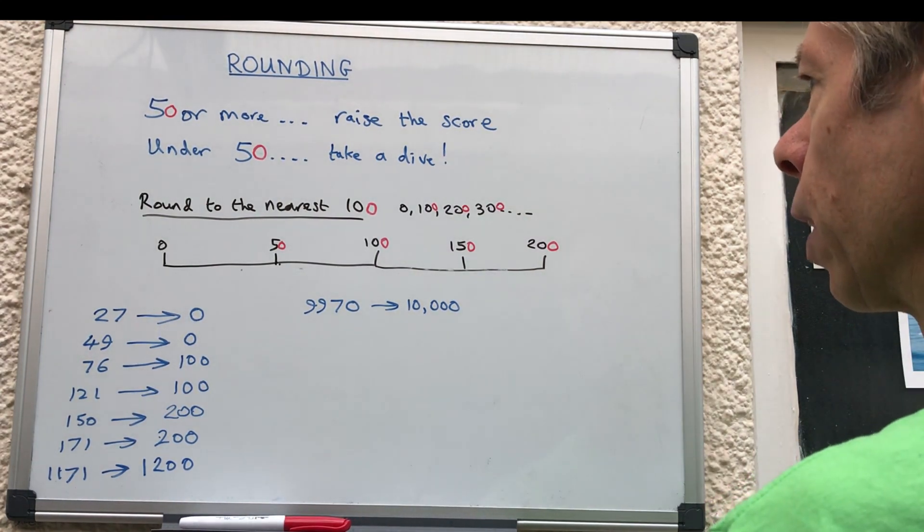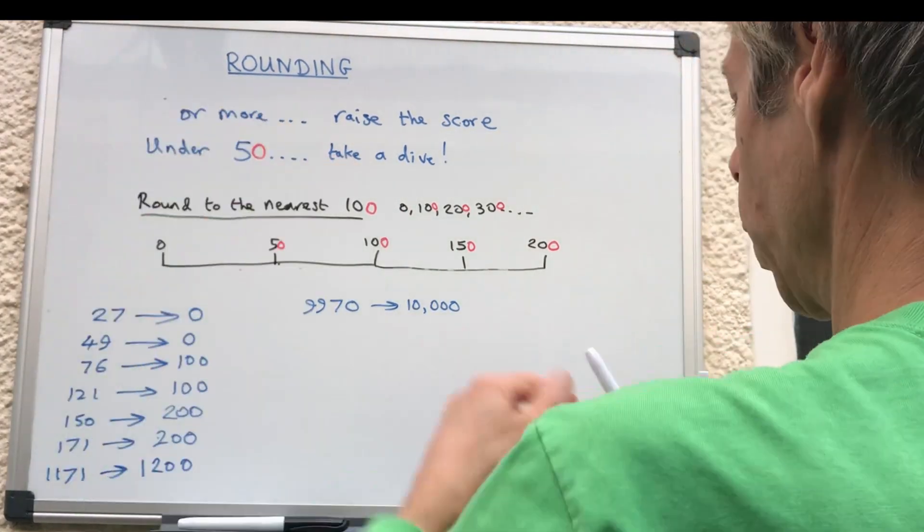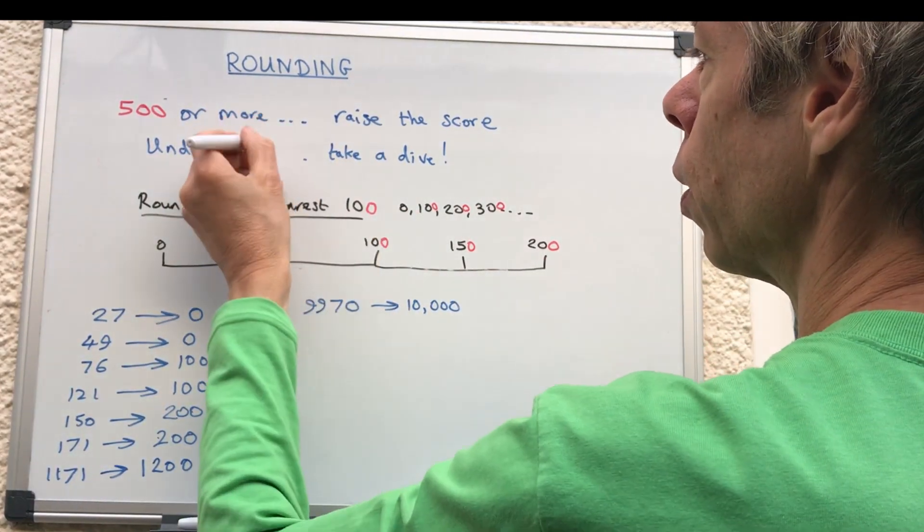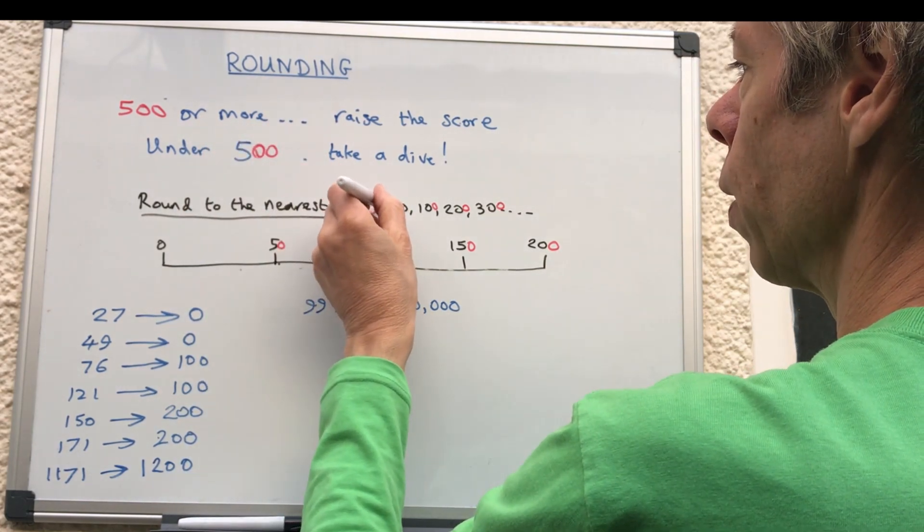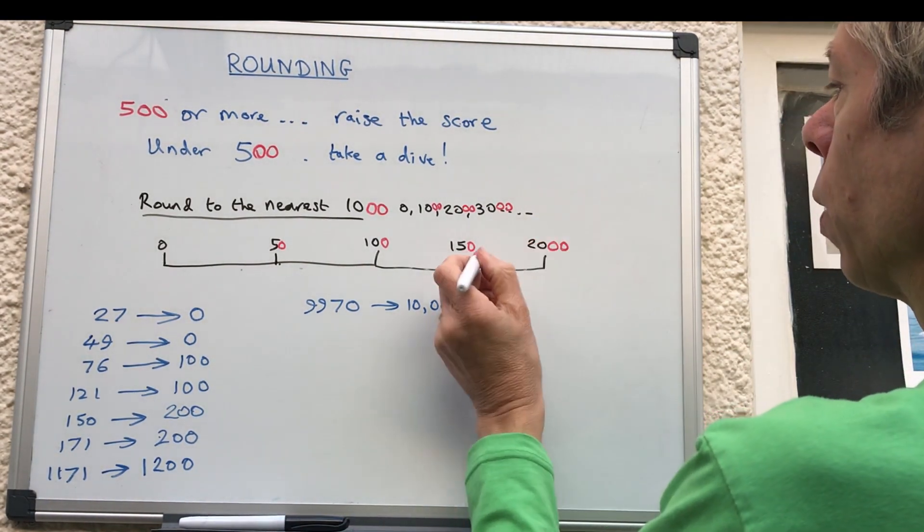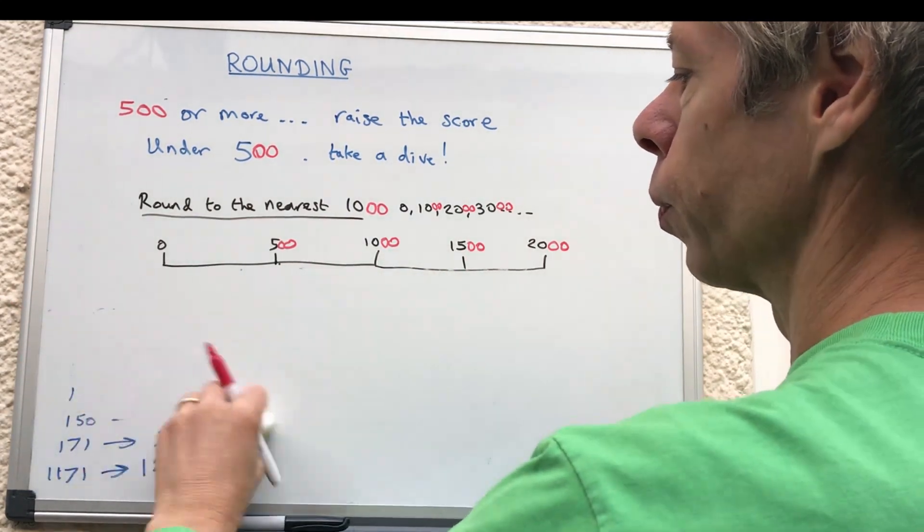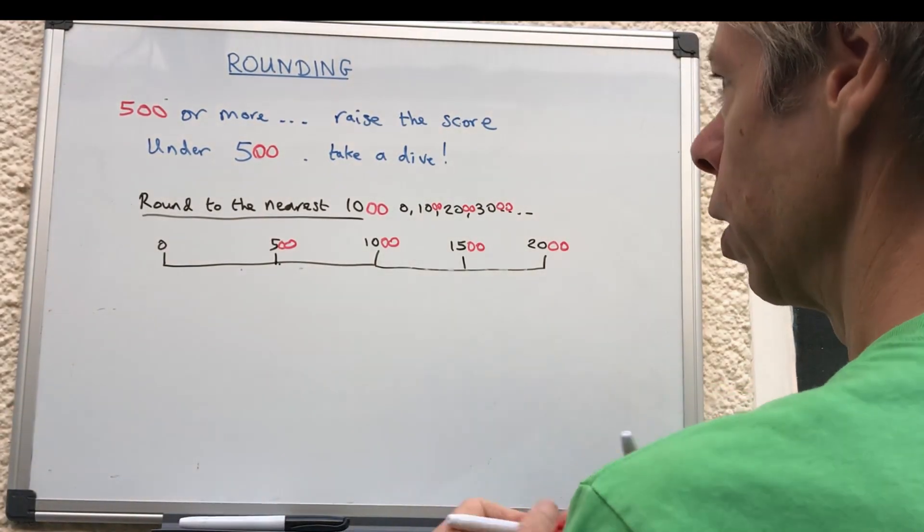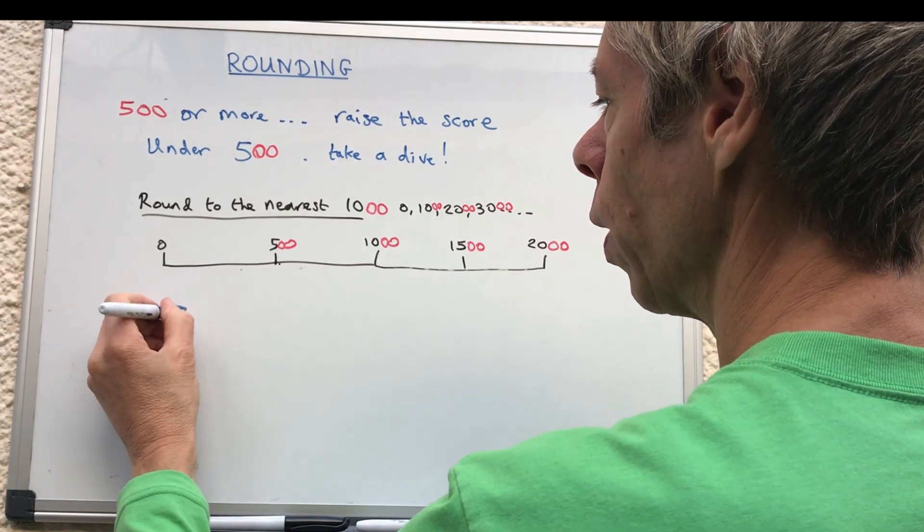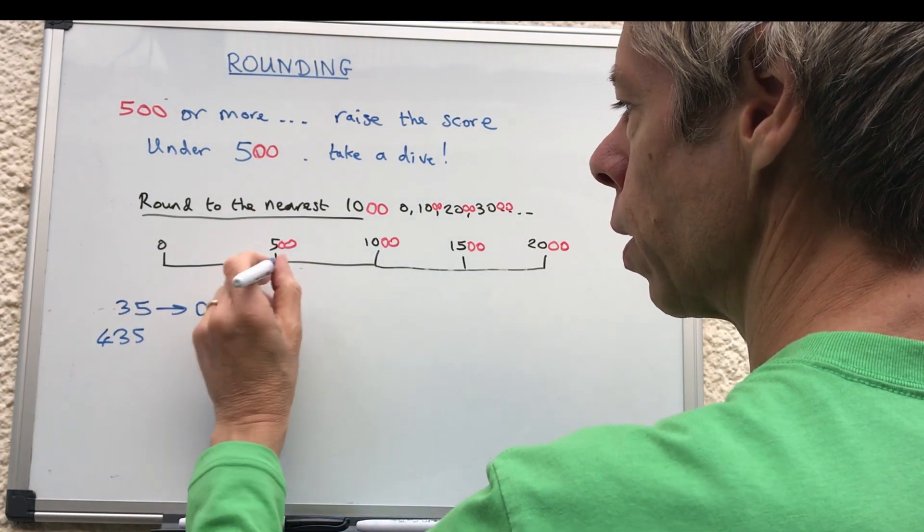So just quickly look at the 1000s now. So rounding to the nearest 1000. So it's 500 or more we raise the score, under 500 we take a dive. So we're now rounding to the nearest 1000. So this would then become 2000, 1500, 1500. Okay, so if we pick a number, let's say you take a low number like 35. Well, that's in well over here, so that's obviously going to go to zero. If we took 435, it's still in here, so that will also round to zero.